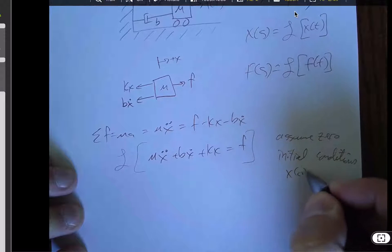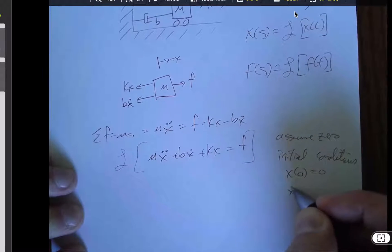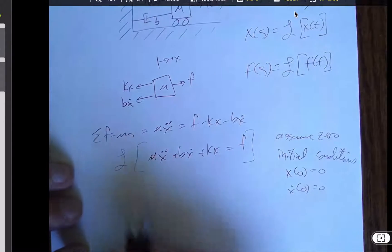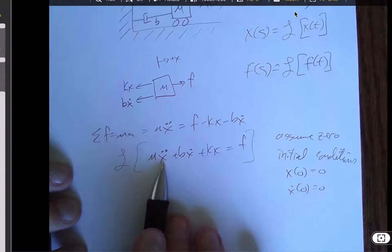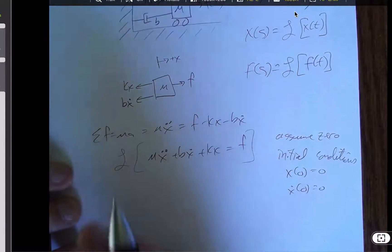So x of zero is equal to zero, x dot of zero is equal to zero. So when we do that, it turns out that the Laplace transform of x double dot is just going to be s squared times x because there's some things we should subtract off, but those are times the initial conditions.